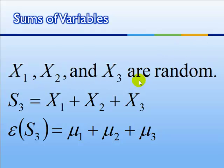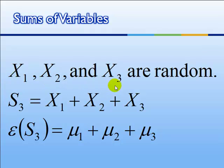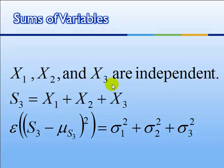When we add variables together, we'd like to know the mean and the variance of the sum. Suppose we have three random variables, x1, x2, and x3. If we add the three variables together and produce a sum — we'll call it s-sub-3 — the expected value of s-sub-3 is simply the mean of x1 plus the mean of x2 plus the mean of x3. So the mean of the sum is the sum of the means. This is true even if x1, x2, and x3 are related in some way. If they are independent, then the variance of the sum is the sum of the variances. This is not true if they have a relationship — that formula is the subject of another tutorial.